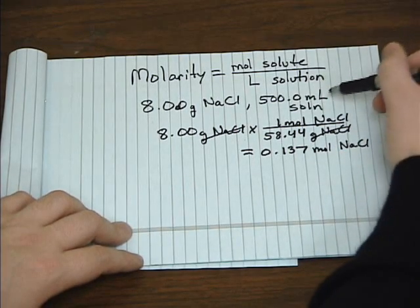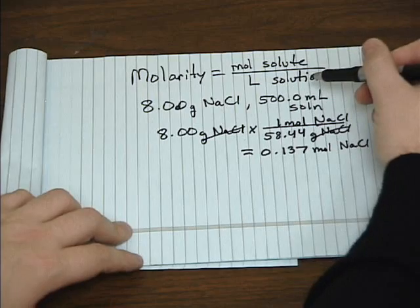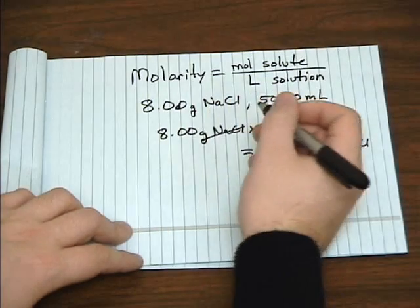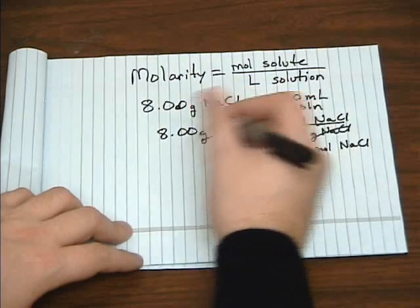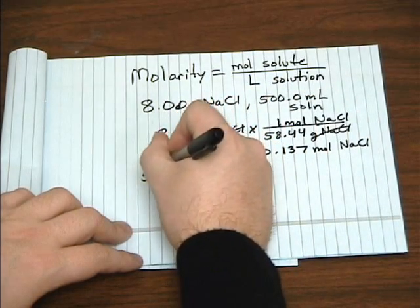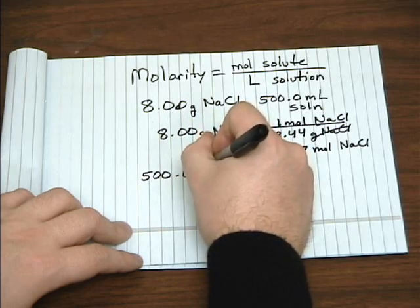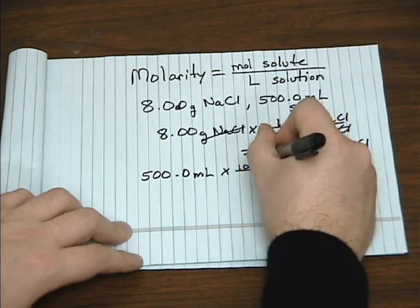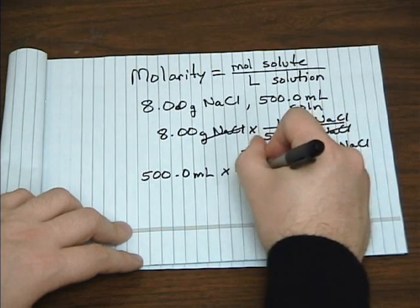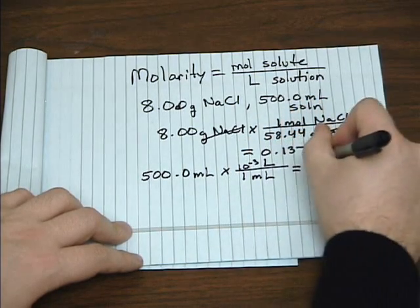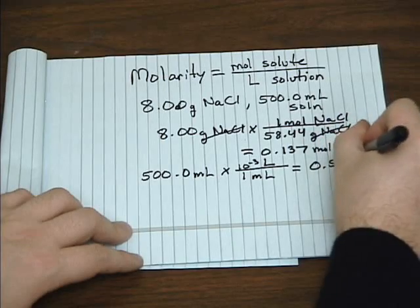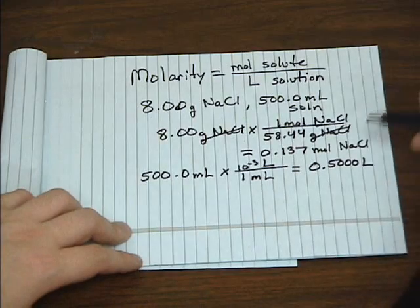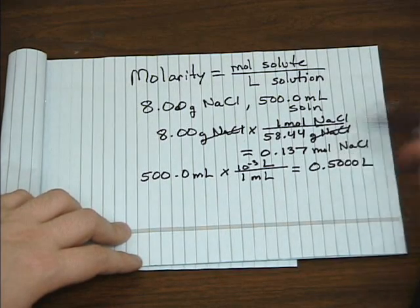We also have to convert milliliters to liters, because it is specific as moles per liter. And this is a conversion you probably don't need to write out, but I'll go ahead and do it anyway, just to be complete. 500 milliliters is 0.5 or a half a liter. So now we have our amount in moles, our volume in liters.